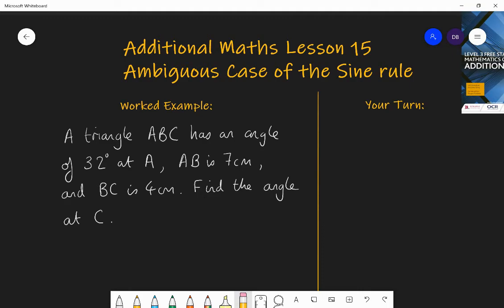Okay, welcome to lesson 15 of the additional maths course. Today we're going to be looking at the ambiguous case of the sine rule. You might think, oh, I've done the sine rule at GCSE and I'm great at it. I can find angles and sides using the sine rule. Well, think again. You probably haven't met cases where the sine rule might have two possible solutions. So we're going to look at that today.